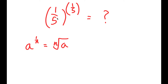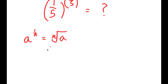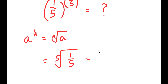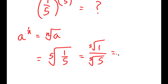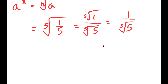So in this case, 1 over 5 to the power of 1 over 5 translates into the fifth root of 1 over 5 using this property. And this is the same thing as the fifth root of 1 over the fifth root of 5, which is 1 over the fifth root of 5, because the fifth root of 1 is 1.